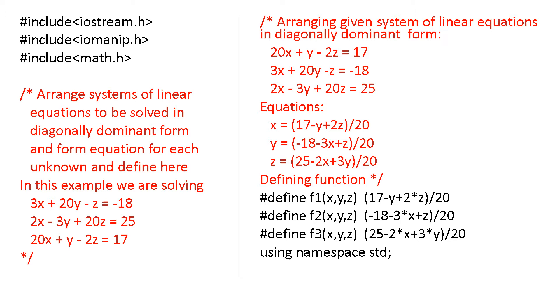Here it is written, arrange systems of linear equations to be solved in diagonally dominant form and form the equation for each unknown and define. Here, we are having the equation that is in the question. Write the Gauss-Seidel program for the equation so that you can find the values for x, y, and z.